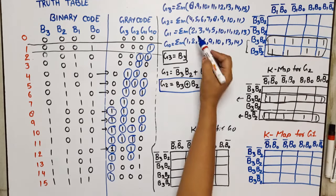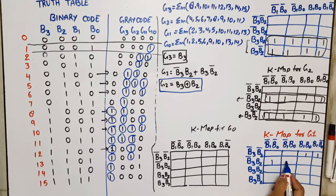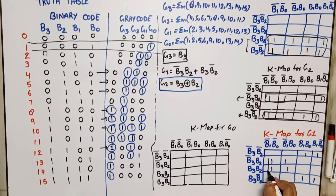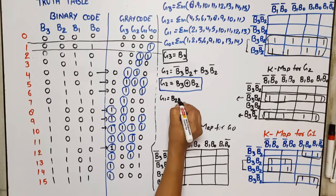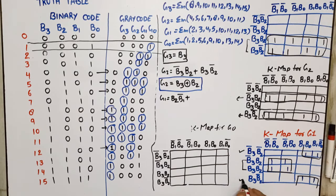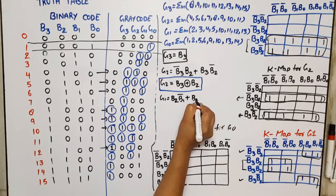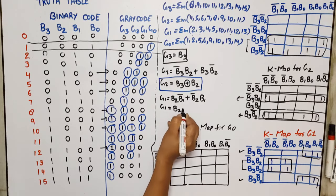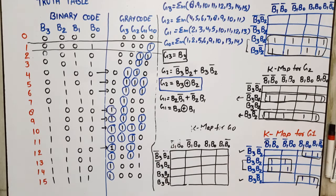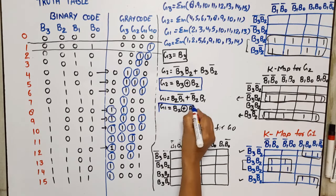For G1, we plot minterms 2, 3, 4, 5, 10, 11, 12, 13 on the K-map. We identify one quad covering rows where B2=1 and B1-bar, and another quad covering the first and last rows where B2-bar and B1 are common. This simplifies to G1 = B2 XOR B1.